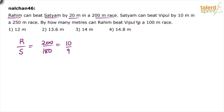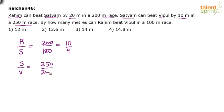Similarly, looking at the second statement: Satyam can beat Vipul by 10 meters in a 250 meter race. So by the time Satyam covers 250 meters, Vipul will cover only 240 meters. This gives us the ratio of Satyam to Vipul as 25 by 24.